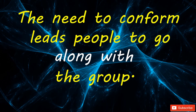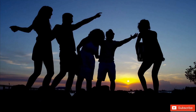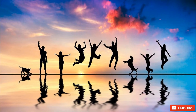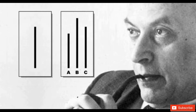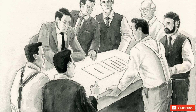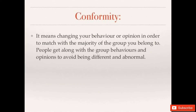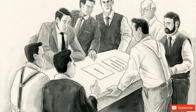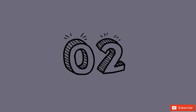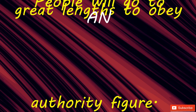Number 3: The need to conform leads people to go along with the group. Most people will go along with the group even if they think the group is wrong. In Solomon Asch's conformity experiments, people were asked to judge which was the longest of three lines. When other members of the group picked the wrong line, participants were more likely to choose the same incorrect line.